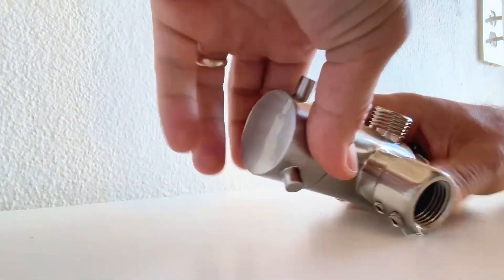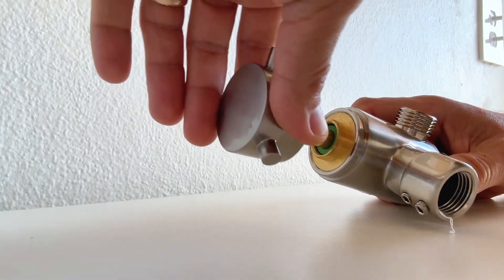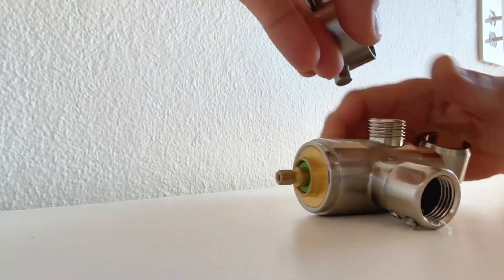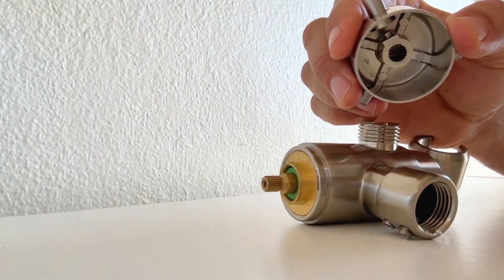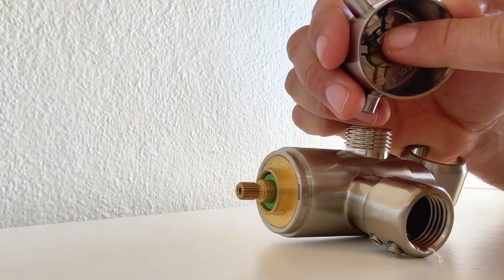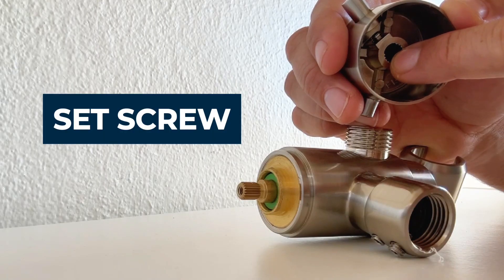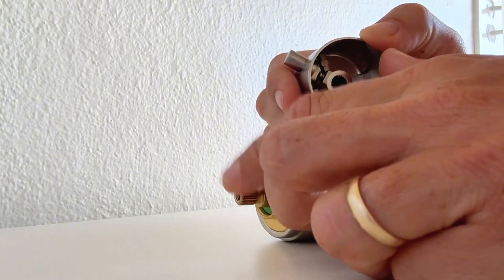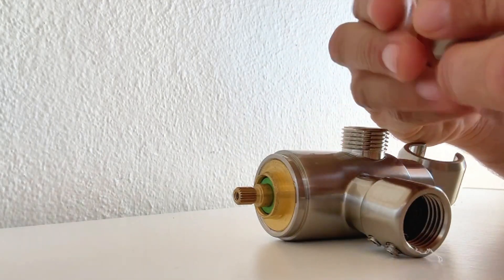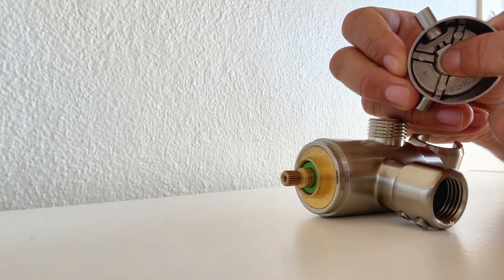If the diverter knob is coming off, you'll see inside of here there is a set screw that should be compressing down on the stem of this cartridge. So how do you access this screw?